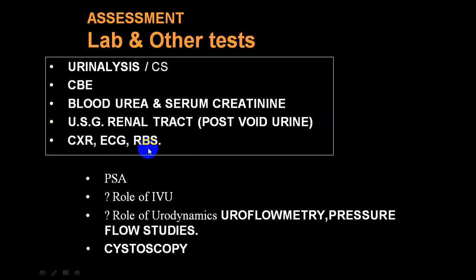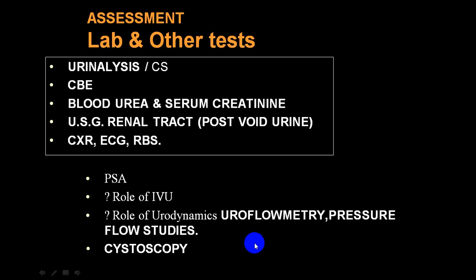PSA is commonly done to detect prostate malignancy. Intravenous urography (IVU) has a doubtful role and can only be done if serum creatinine is normal and you want to find the exact site of obstruction. In urodynamic studies, catheterization is useful to assess uroflowmetry, pressure studies, and flow studies. Cystoscopy is useful to identify urethral and bladder pathophysiology.